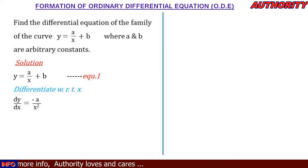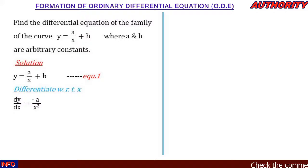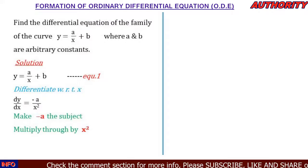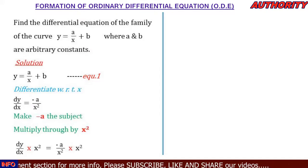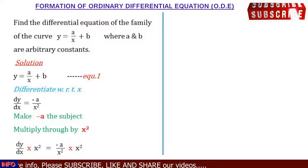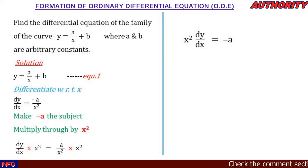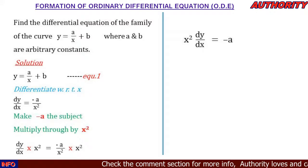We have two arbitrary constants, so we need to differentiate two times. But first, let's make -a the subject to simplify things. We multiply both sides by x², so that -a stands alone. Multiplying gives us x² dy/dx on the left, and on the right the x² cancels, leaving x² dy/dx = -a.